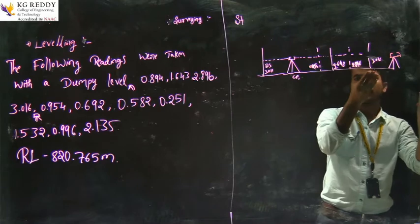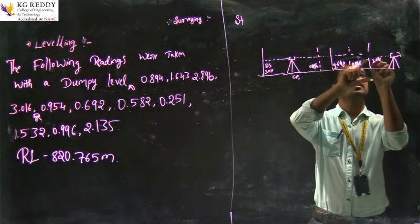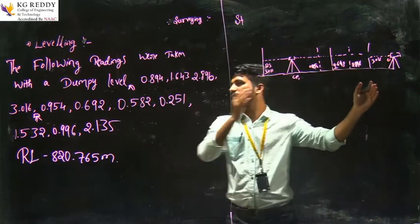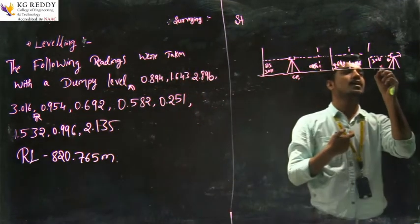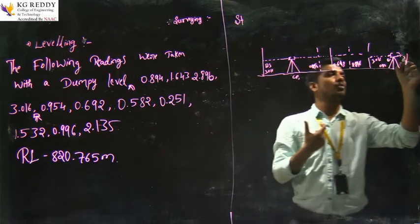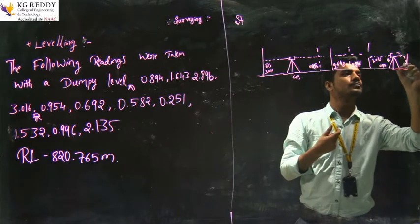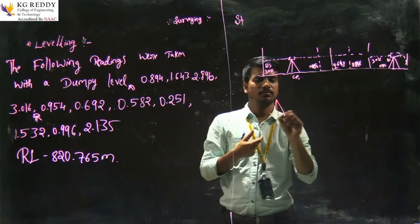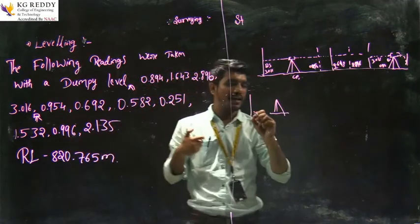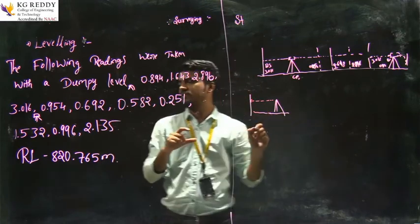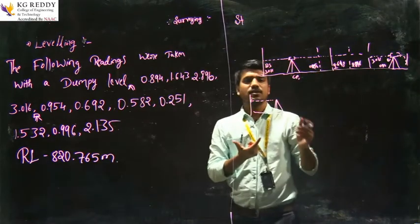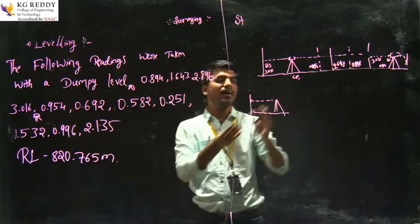After that, we have to note the last elevation of that point, which is called the foresight of the first station, and again we translate to the back sight of the second station. The reading of 0.954 is the first back sight of the second setup. The last point of the first station is the reference point for your second station setup.